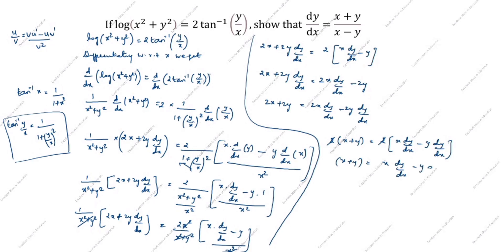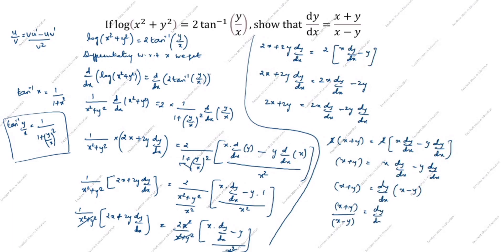After canceling the 2s: x + y = dy/dx × (x − y). Therefore, dy/dx = (x + y)/(x − y).